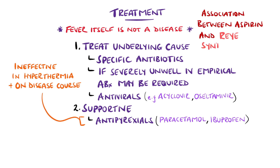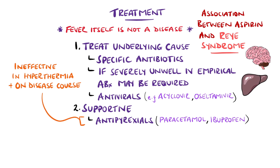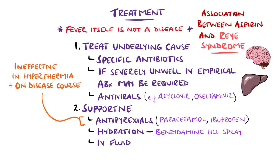Aspirin is avoided due to the association with Reye's syndrome, which is a form of encephalopathy featuring hepatic dysfunction that comes from mitochondrial injury. Encouraging oral intake will help prevent dehydration, and this may be facilitated by using an anaesthetic or anti-inflammatory throat spray like benzydamine hydrochloride in cases where the child has a sore throat. Intravenous fluids are needed in the more severe cases.